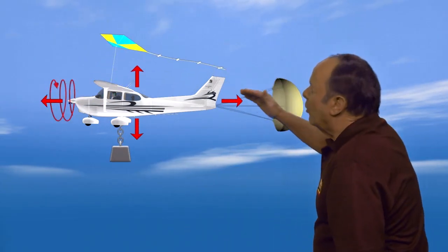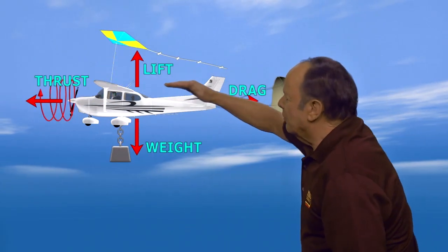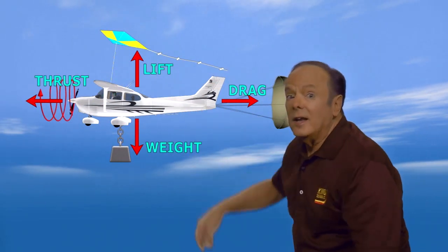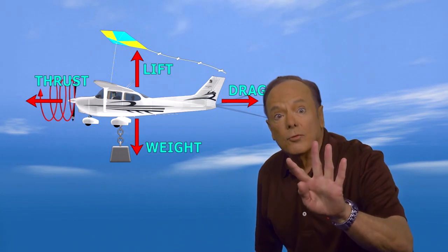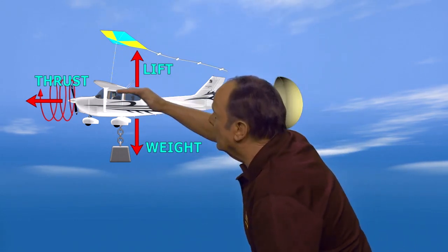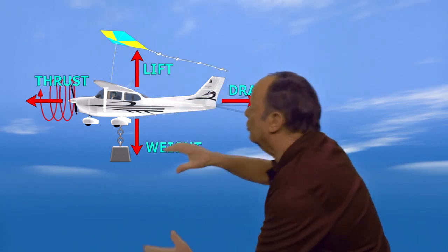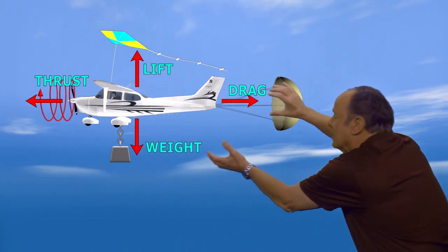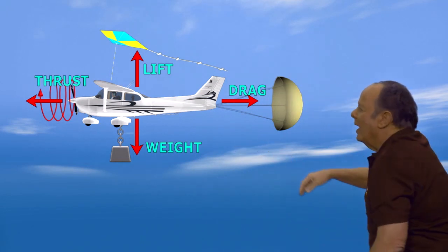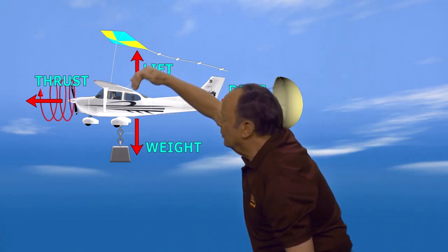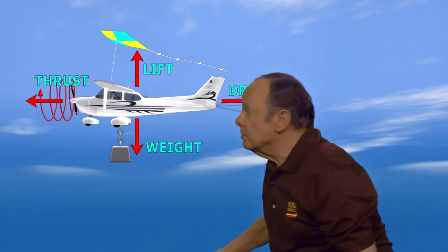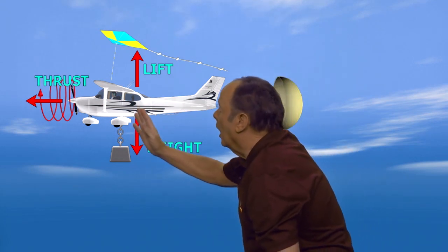There are four aerodynamic forces acting on an aircraft in flight. These four forces are thrust, which makes the airplane go forward; drag, which tends to slow it down; weight, which wants to make it go down; and lift, which wants to make it go up.